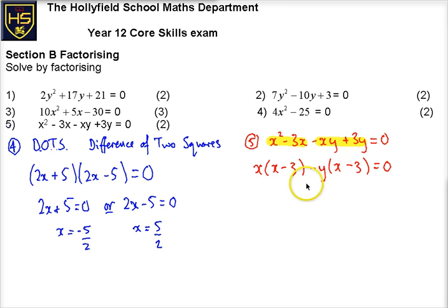Now once we've done that, we can take out, we can look at the common factor of these two terms now. And the common factor of these two terms is x minus 3. And then the other terms, we get x and minus y. So we've actually factorised this into two brackets, but we kind of went through an intermediate step where we split it up into two little sections, found some common factors, and then factorised a second time.